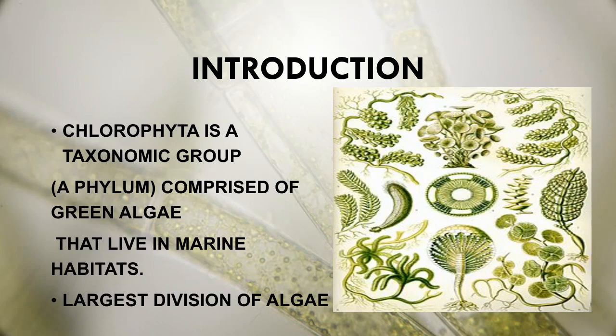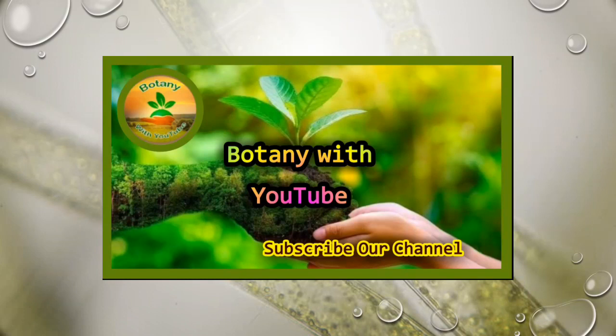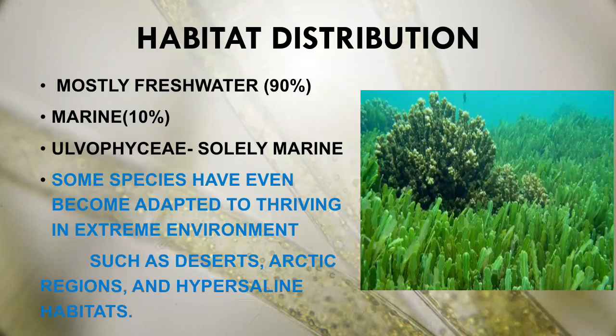Chlorophyta is a taxonomic group that includes green algae living in marine habitats. It is the largest group of algae. Regarding habitat and distribution, marine algae live in seas and deep sea oceans. Mostly, freshwater algae make up 90–95% and marine algae are about 10% of algae in nature.